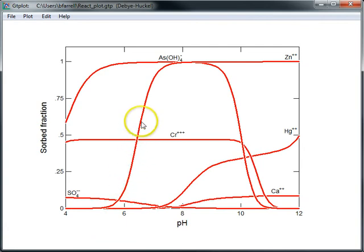Here I have the results of a surface complexation model plotted up in GTPlot. You'll notice that there are a number of lines on this one plot. It may be hard to tell them apart.